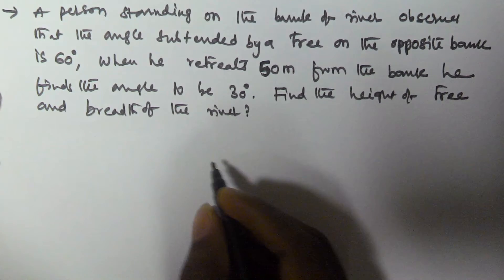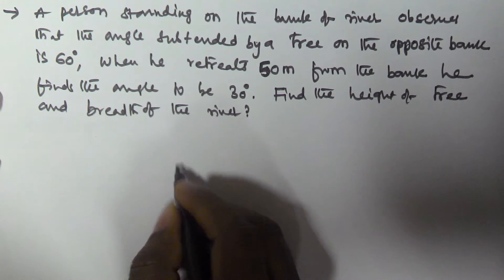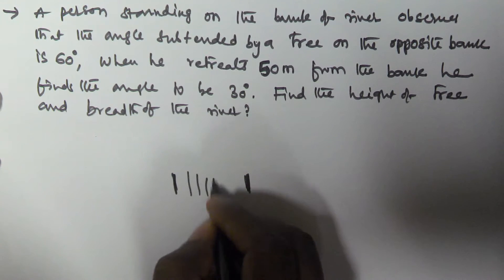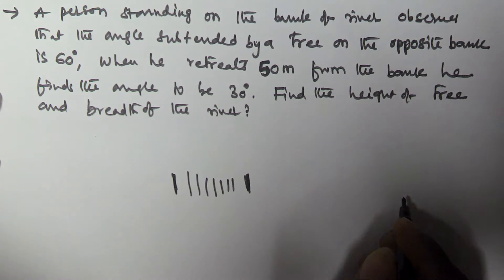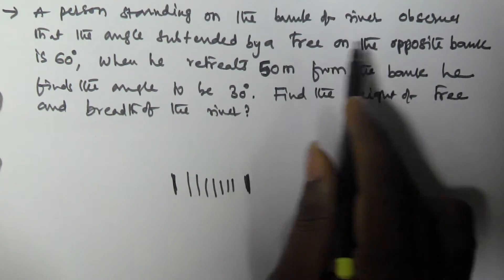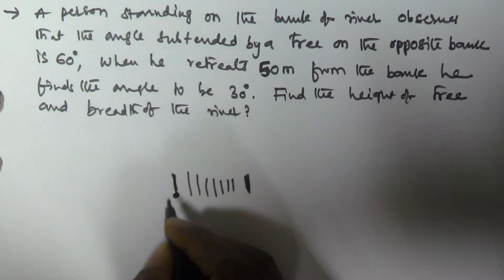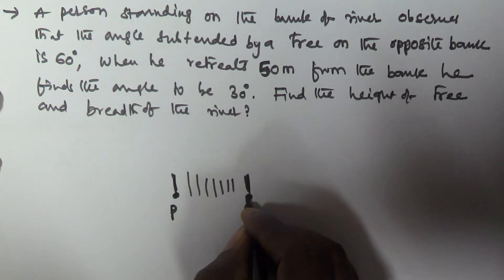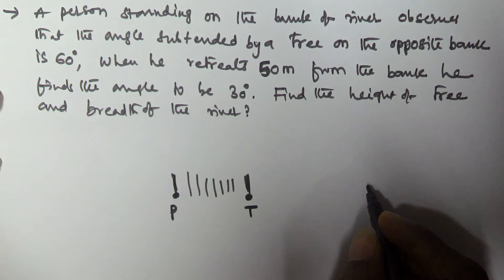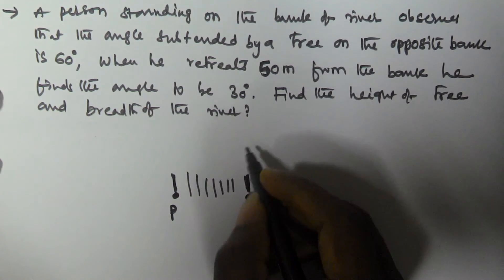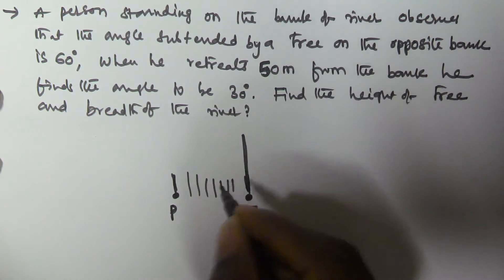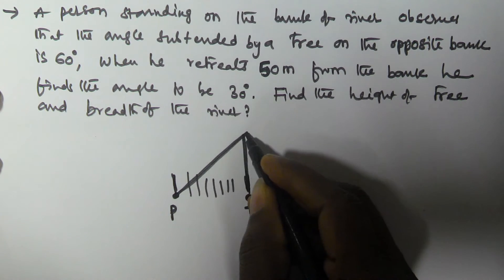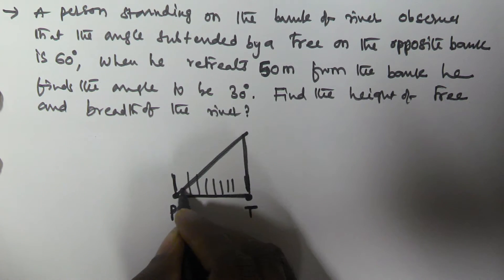So let us assume this is the river — from here to here. This is the first bank and this is the second bank, with water flowing in between. A person P is standing on the bank. The tree is on the other side of the bank, and the angle subtended by the tree at person P is 60 degrees.